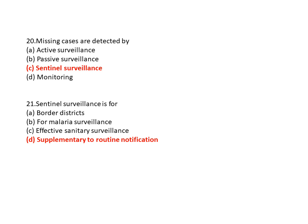Question 21: Sentinel surveillance is for? Option A is broader distress, option B is formal area surveillance, option C is effective sanitary surveillance, and option D is supplementary to routine notification. So option D is the correct answer — supplementary to routine notification.